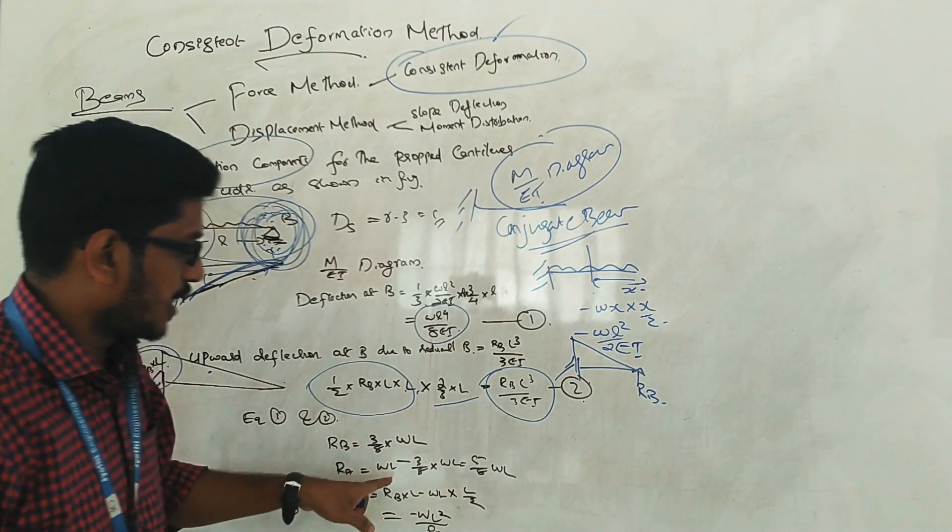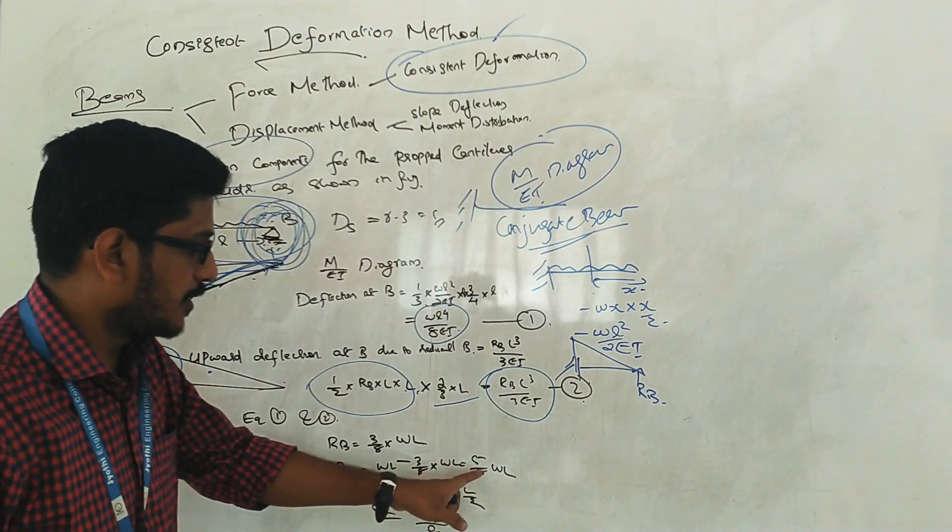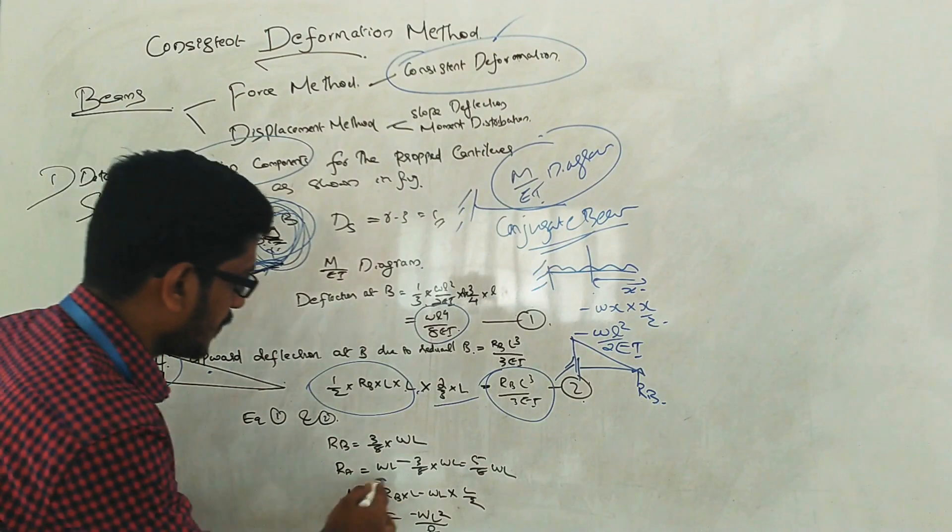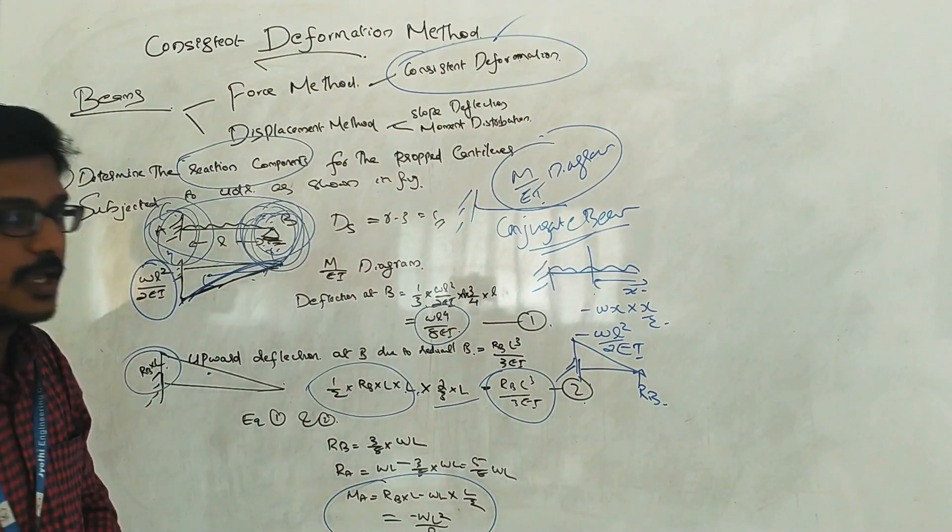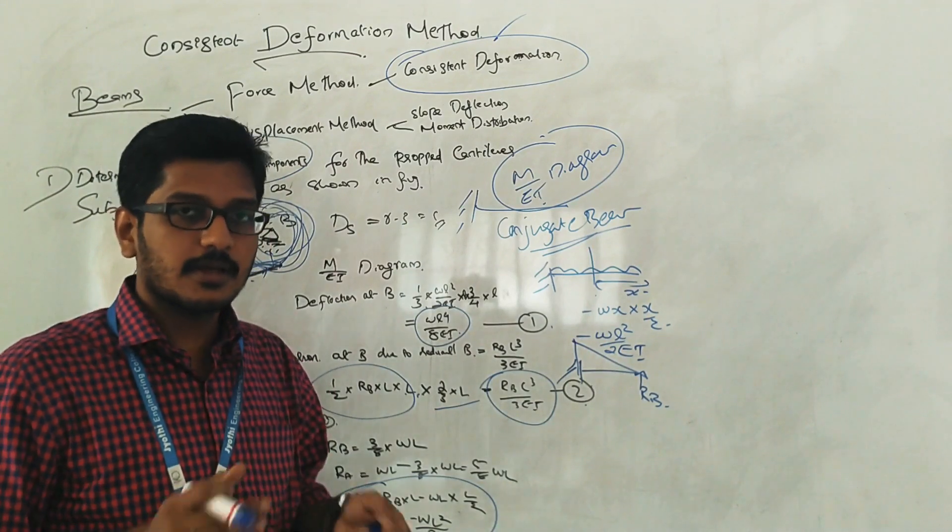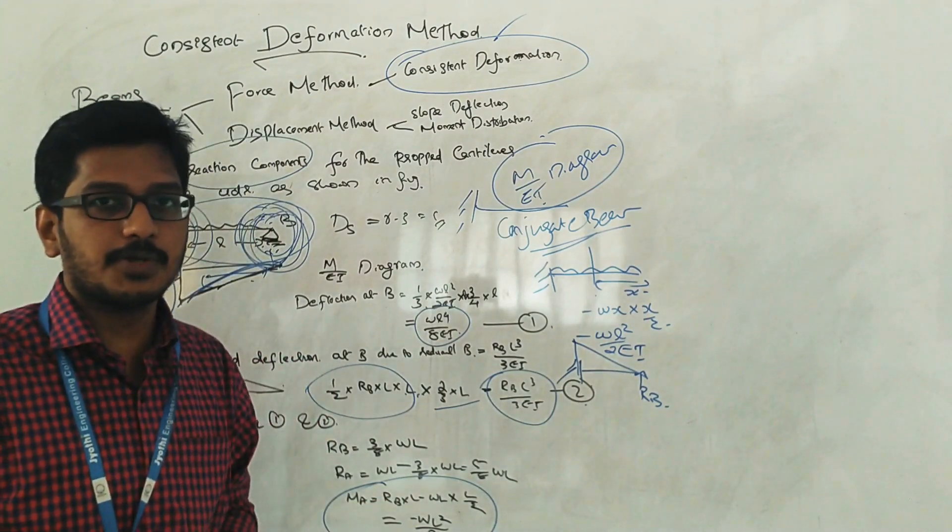RA equals wl minus 3/8 into wl, which equals 5/8 into wl. And the moment about the end point equals this value. Finally, you have to draw if it is asked - draw the shear force and bending moment diagrams.